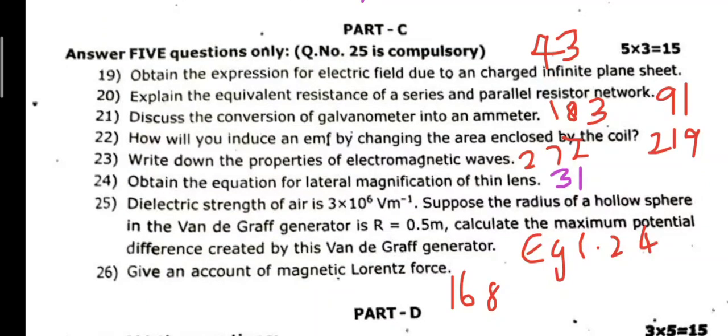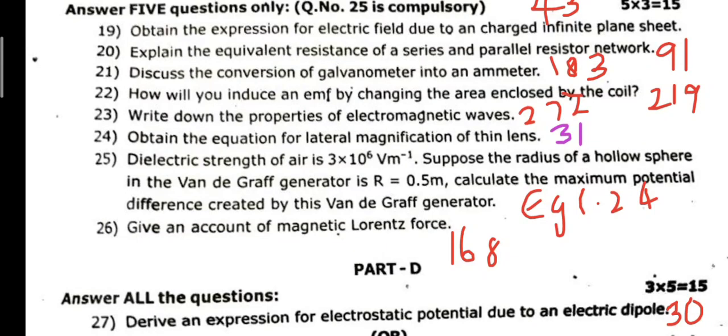Next three mark. 19th question: Obtain the expression for electric field due to a charged infinite plane sheet, page 43. 20th question: Explain the equivalent resistance of series and parallel resistor network, page 91. 21st: Discuss the conversion of galvanometer and ammeter, page 183. This is an important question. 22nd: How will you induce an EMF by changing the area enclosed by the coil, page 219.